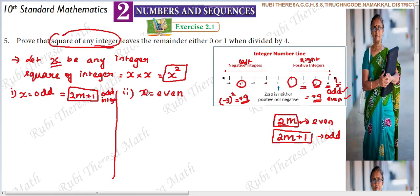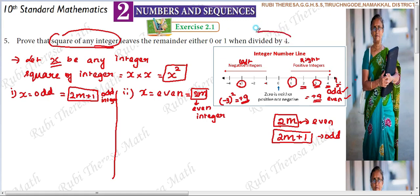If x is odd, we will consider x equals 2m plus 1 to represent any odd integer, whether positive or negative. If x is even, we will substitute x equals 2m. Now the question says: prove that the square of any integer leaves the remainder either 0 or 1 when divided by 4. So our divisor is 4.